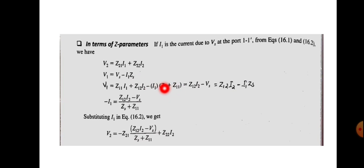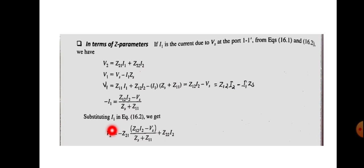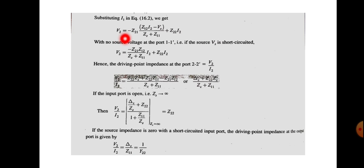Rearranging, we get I1 = (Z12·I2 − Vs) / (Zs + Z11). We substitute this expression for I1 into the equation V2 = Z21·I1 + Z22·I2. So V2 = −Z21·(Z12·I2 − Vs)/(Zs + Z11) + Z22·I2. Rearranging and collecting I2 terms, we can simplify this equation further.